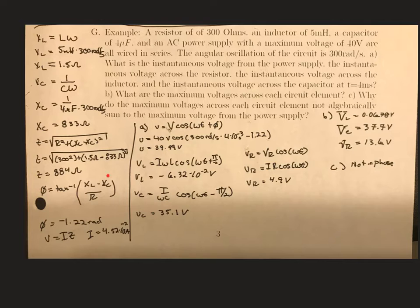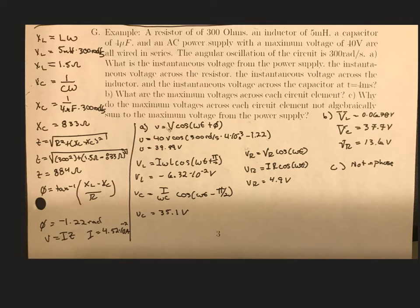Now I can find the phase angle using those reactance values and the resistance given in the problem. Remember, the answer for the phase angle is in radians. I can then plug that phase angle in to find the instantaneous voltage across the power supply.